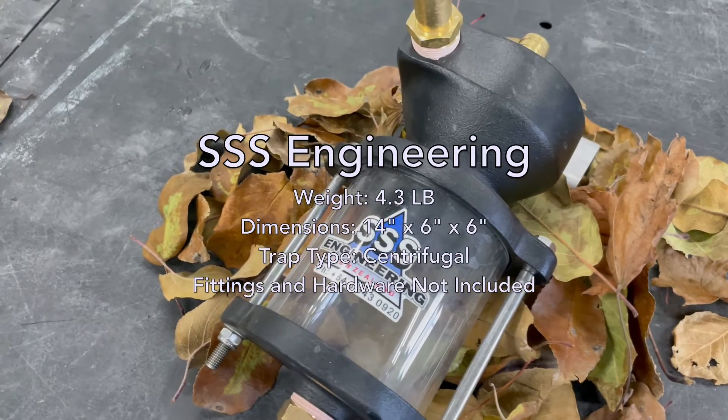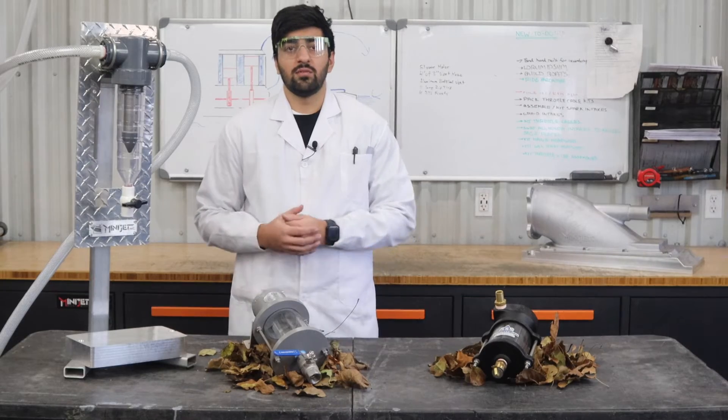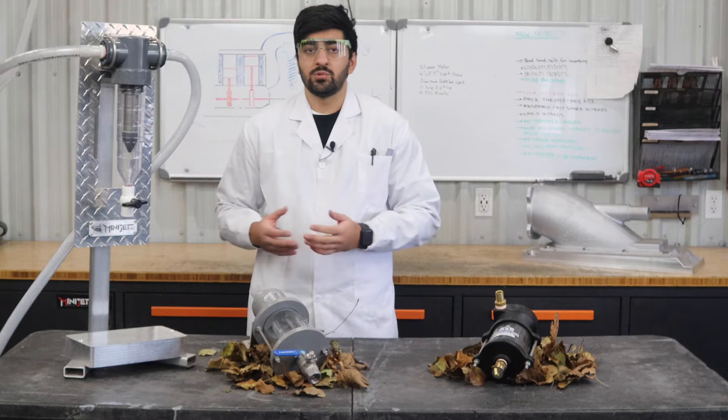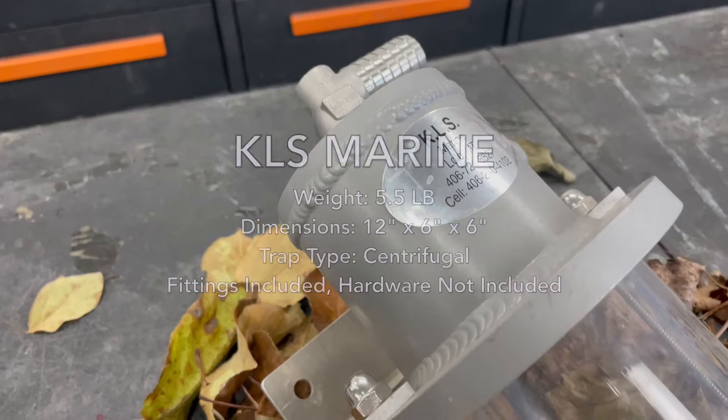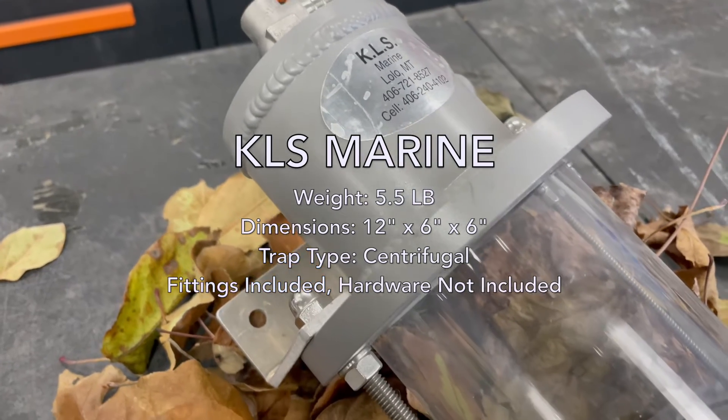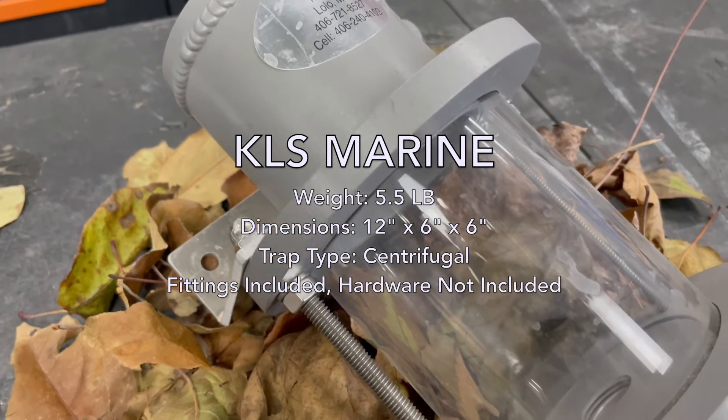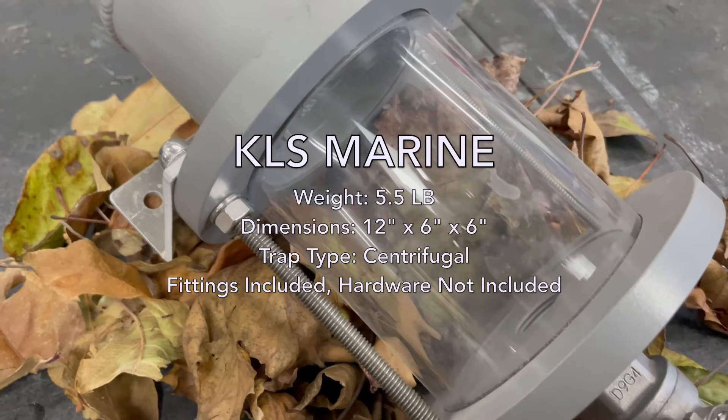Second, we have the KLS Marine sand trap. This one includes three-quarter inch inlet and outlet fittings as well as a drain valve, but you'll need to supply your own mounting hardware. This unit weighs about five and a half pounds and has overall dimensions of 12 by 6 by 6 inches.